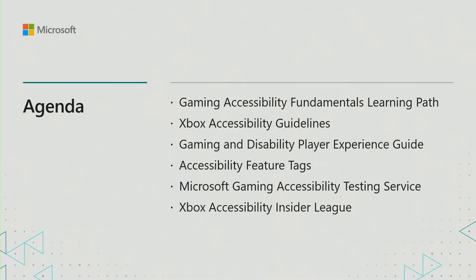Today, we'll be going through some of the resources that the Microsoft Gaming Accessibility team has put together to help game developers and publishers reach the approximately 429 million gamers in the world that have some form of disability. The resources we'll be discussing today are the Gaming Accessibility Fundamentals Learning Path, the Xbox Accessibility Guidelines, the Gaming and Disability Player Experience Guide, Accessibility Feature Tags, the Microsoft Gaming Accessibility Testing Service, and the Xbox Accessibility Insider League.